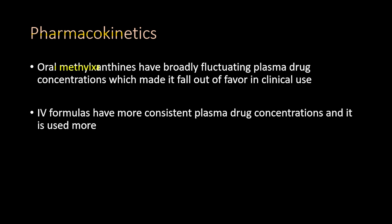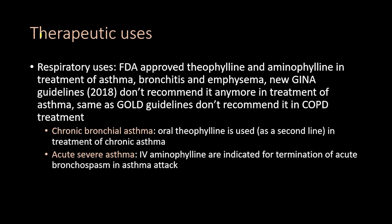Regarding important pharmacokinetics points: oral methylxanthines have broadly fluctuating plasma drug concentrations, which has made them fall out of favor in clinical use. IV formulations have more consistent plasma drug concentrations and are used more commonly now.